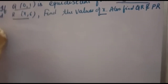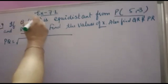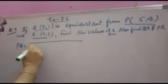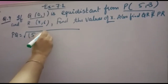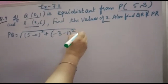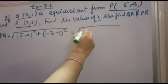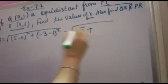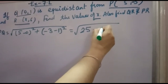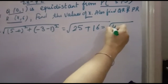The distance of Q and P: this is X1, this is Y1, this is X2, this is Y2. You will get √((X2−X1)² + (Y2−Y1)²). Now 5 minus 0 is 5, 5 squared is 25. Plus, minus 3 minus 1 is minus 4, minus 4 squared is 16. So 25 plus 16 equals 41.